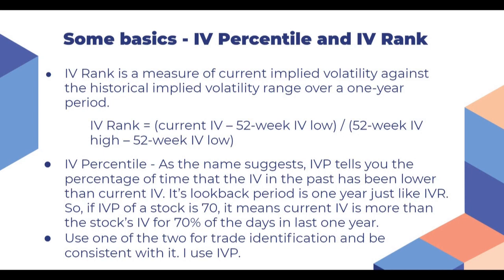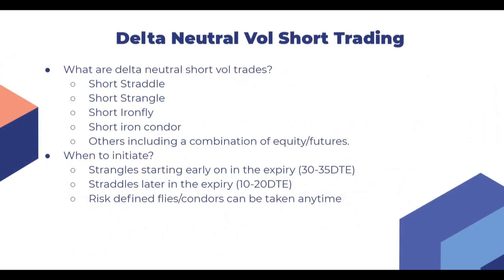I use IVP always when I am looking for a vol short trade. Now, delta neutral vol short trades - what are they? These are short straddle, short strangle, short iron fly, short iron condor, or any other strategy which we can make using a combination of options along with equity and futures. All these trades will have delta of zero when we start the trade, and we are shorting the high volatility which we are perceiving.